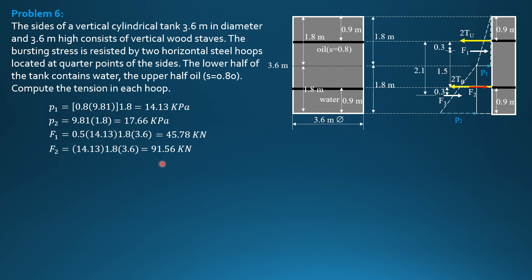F3 is due to this triangular pressure diagram, 0.5 of P2, 17.66, height 1.8, perpendicular to the board 3.6 again, diameter. So 57.22 kilonewtons, F3.